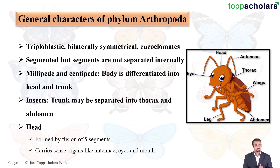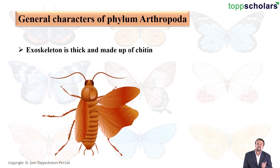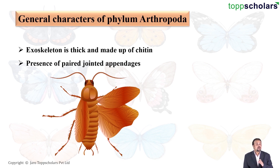Moving on, let us talk about the skeleton. The endoskeleton is absent, but the exoskeleton is very thick and tough, made up of a polysaccharide known as chitin. This chitin makes the body of arthropods very tough and also makes it waterproof.